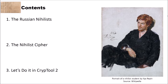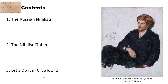We structured this video into three different parts. In the first part, we will have a brief look at the Russian nihilists. Then we will have a more detailed look at the nihilist cipher — how the cipher works, what the keyspace size is, and what its unicity distance is. And finally, we will do it in CrypTool 2 and create our own workspace with the nihilist cipher.